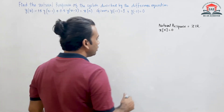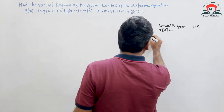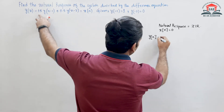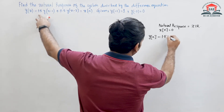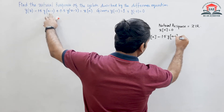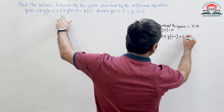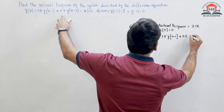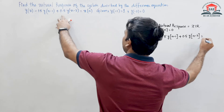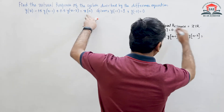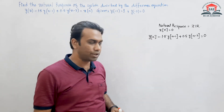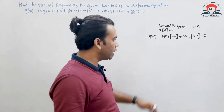After putting x(n) = 0, the equation becomes: y(n) - 1.5·y(n-1) + 0.5·y(n-2) = 0. So it has become a homogeneous equation.